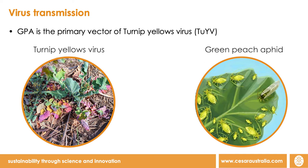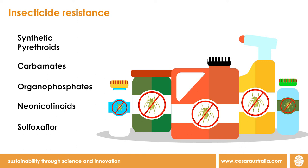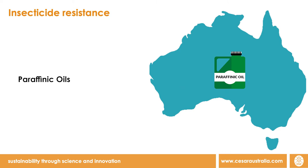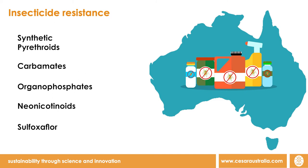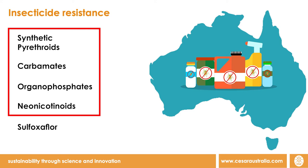There are five insecticide groups that are currently registered against the green peach aphid for use in grains by the APVMA. Paraffinic spray oils are also registered for suppression of GPA. Research undertaken by CESAR and the CSIRO demonstrated that GPA has developed widespread resistance to four out of the five of these chemical groups.